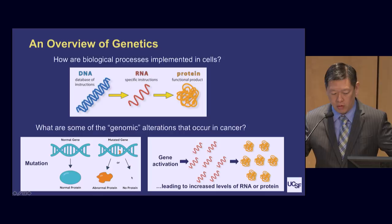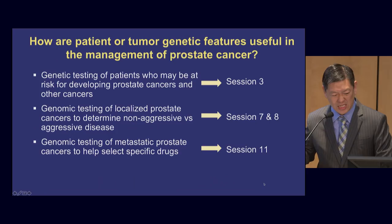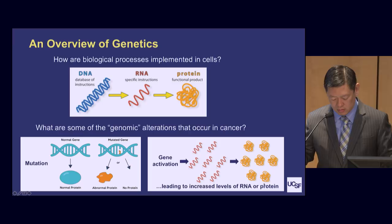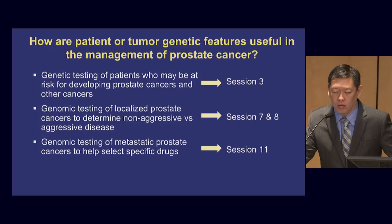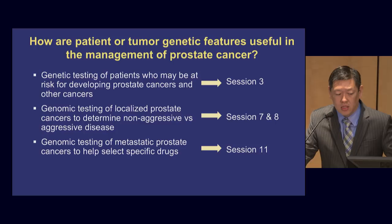Another way that cancer occurs is having too much of a particular type of RNA, or too much of a particular type of protein. There are many other ways, but these are some basic examples. Another question to think about is how patient and tumor genetic features are useful in the management of prostate cancer. One thing we can think about is genetic testing of patients or people who may be at risk for developing prostate cancers and other cancers — this is the concept of screening for hereditary predispositions.